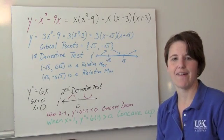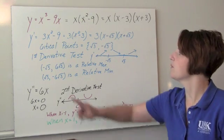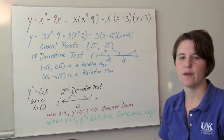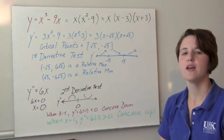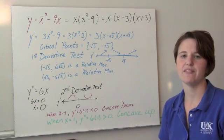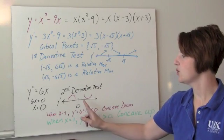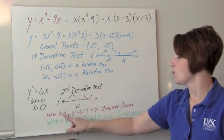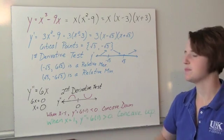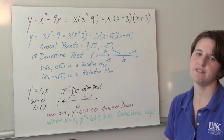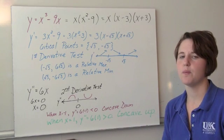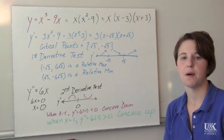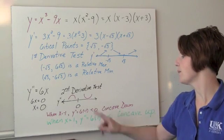This whole lesson is about concavity, so we take the second derivative of 3x squared minus 9, which is 6x. The second derivative equals zero when x equals 0, so we use that for our second derivative test. To the left of 0, picking x equals negative 1: the second derivative is 6 times negative 1, which is negative — concave down. To the right of 0, picking x equals 1: the second derivative is 6 times 1, which is positive 6 — concave up.